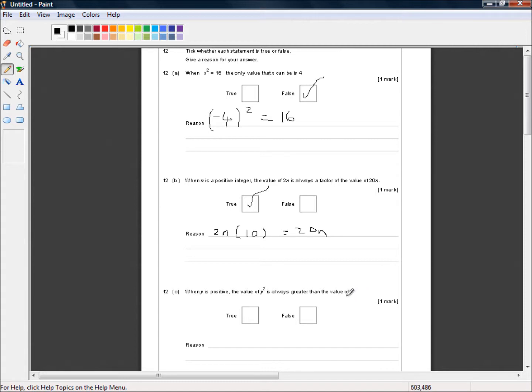That is wrong because if you take, for example, a half and you square it, you get a quarter which is less than a half.